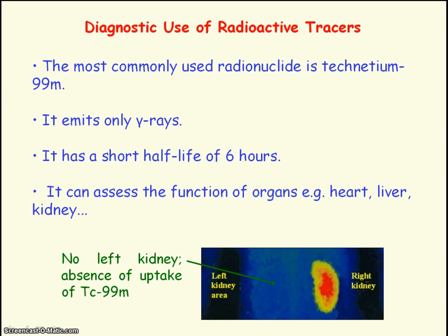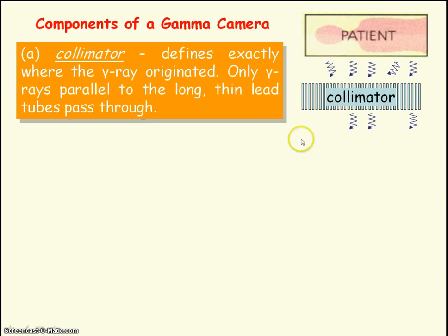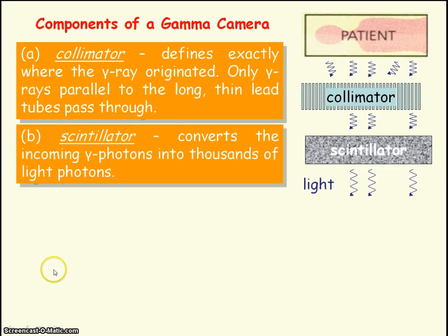This is showing that the patient has no left kidney. The gamma camera detects the gamma radiation penetrating out of the patient and has four main components. The first component is the collimator, which defines exactly where the gamma rays came from inside the body. The collimator is made up of long thin parallel lead tubes, and only gamma rays parallel to these tubes can pass through — any gamma rays meeting the lead tubes at an angle will be absorbed.